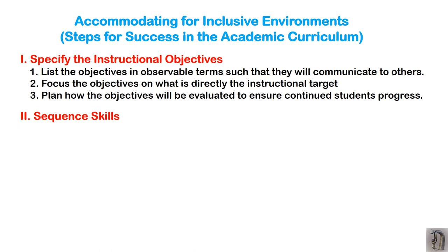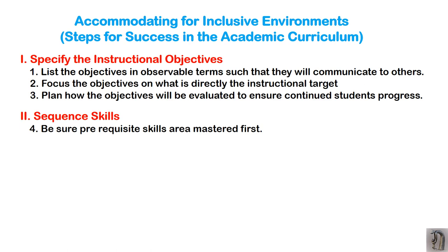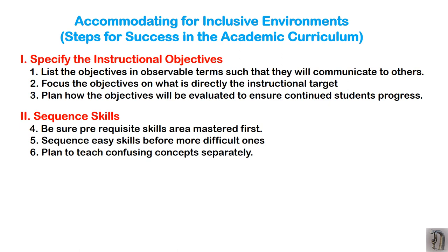Sequencing skills is also very important and plays a major role in adapting the academic curriculum. Make sure you understand the prerequisite skill — whether the child has already learned and mastered it or not. For example, if you have taken the objective of double-digit addition but the child doesn't know single-digit addition, you have not sequenced things properly. Check the baseline and current level of skills first, then sequence from easy to difficult skills.